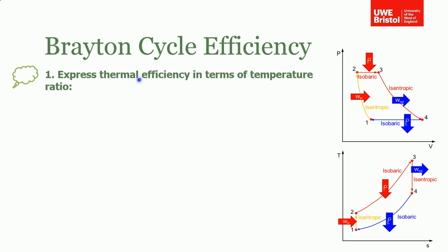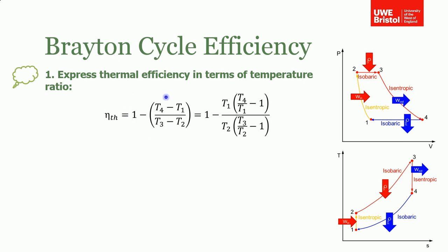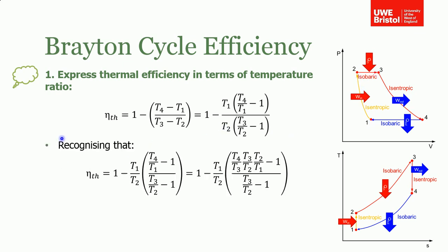Expressing thermal efficiency in terms of temperature ratio: after cancelling the m and cp terms, we take T1 out of the numerator bracket and T2 out of the denominator bracket. To get everything in terms of a single temperature ratio, we use a mathematical identity: T4/T1 equals (T4/T3)·(T3/T2)·(T2/T1), where the T3 and T2 terms cancel, giving us the thermal efficiency as a function of all the temperature ratios between consecutive states.